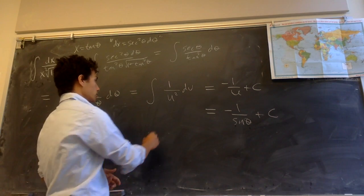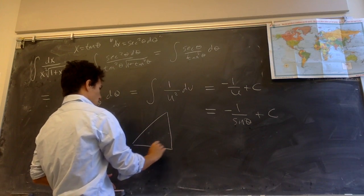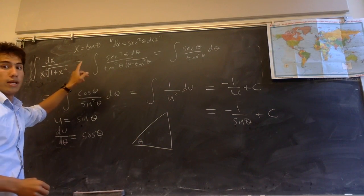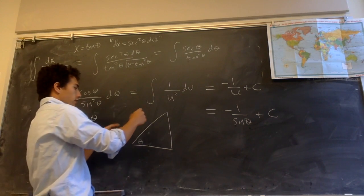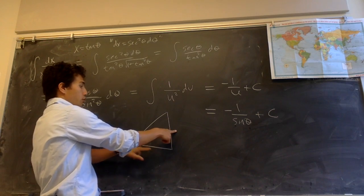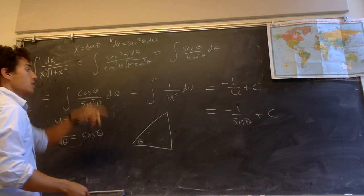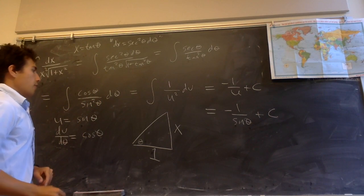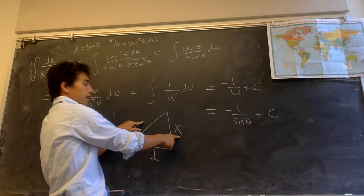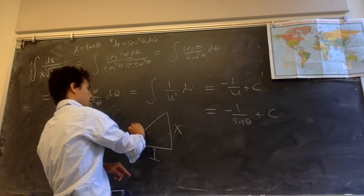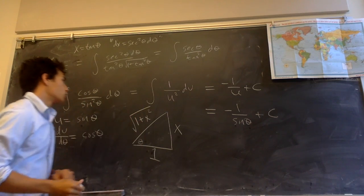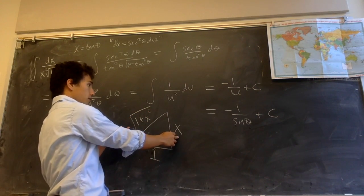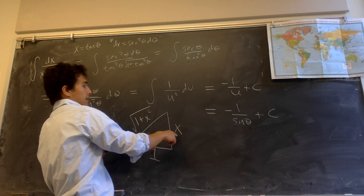The way to do that is to draw the correct right triangle where this angle is theta. The key is to set this triangle up so it matches the substitution x equals tangent theta. In a right triangle, tangent of theta equals opposite over adjacent, and we want that to equal x. So we make the opposite leg equal to x and the adjacent leg equal to 1. By the Pythagorean theorem, the hypotenuse has length square root of 1 plus x squared. Now sine of theta is opposite over hypotenuse, so sine theta equals x over square root of 1 plus x squared.